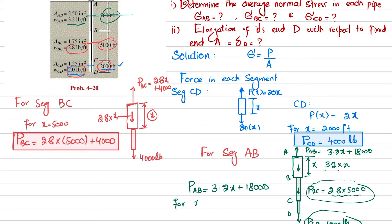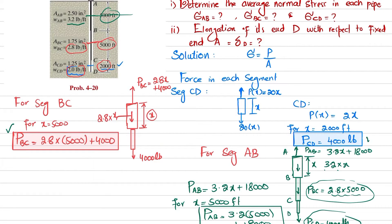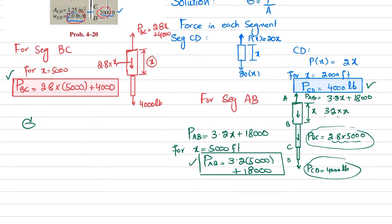The length of AB is 5,000 feet, so P_AB = 3.2 × 5,000 + 18,000. We now have the internal force in each pipe segment. The stress in pipe CD equals P_CD divided by the cross-sectional area: 4,000 divided by 1.25, giving a stress of 3.2 ksi.